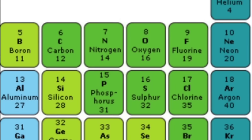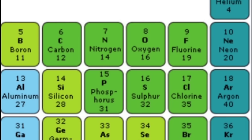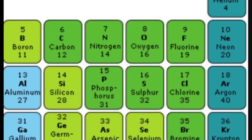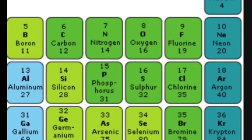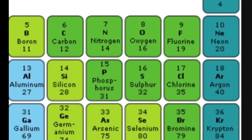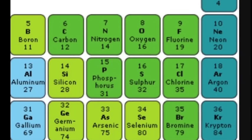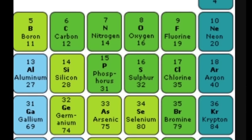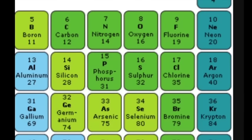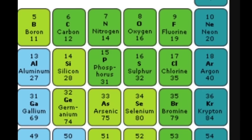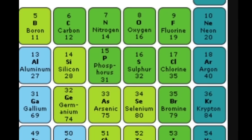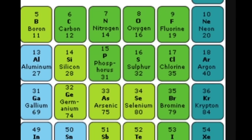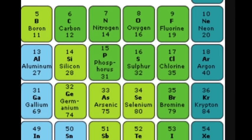Groups thirteen, fourteen, fifteen, and sixteen do have names, but more often they are just called by the element at the top of the column: the boron group, the carbon group, the nitrogen group, and the oxygen group.